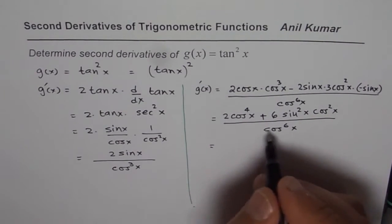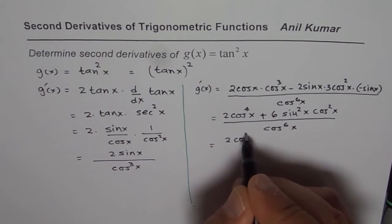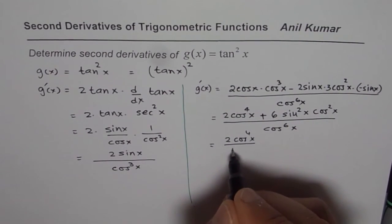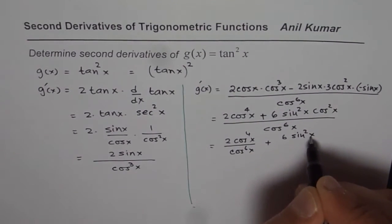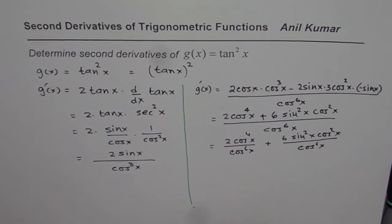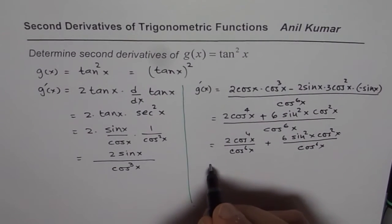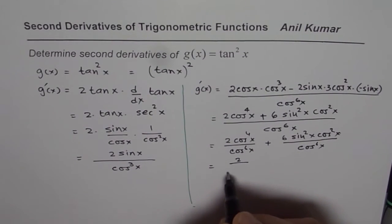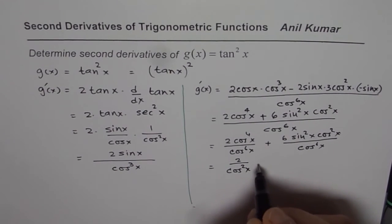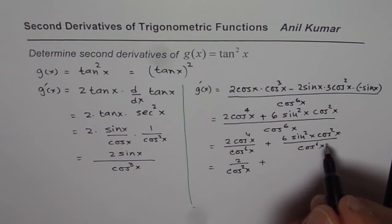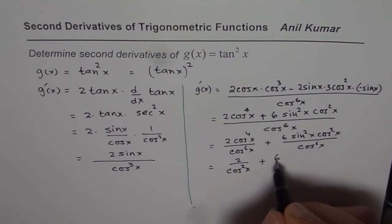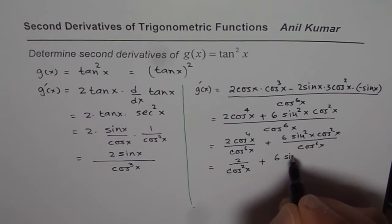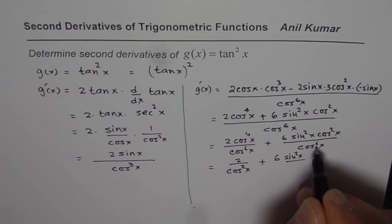We can divide each term by cos to the power of 6 x. I am showing you how to get the next step. Dividing 2 cos to the power of 4 x by cos to the power of 6 x, the exponents give us 2 over cos square x. For the second term, 6 sin square x cos square x divided by cos to the power of 6 x, we can write this as 6 times sin square x over cos square x.